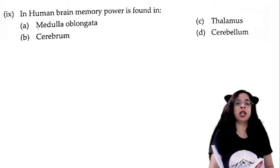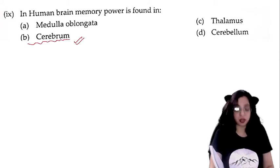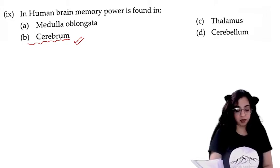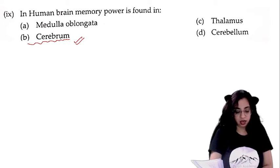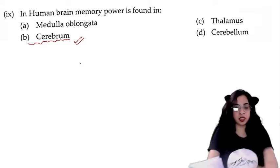In the human brain, memory power is found in: medulla oblongata, cerebrum, thalamus, or cerebellum? The answer is cerebrum. Cerebrum is the largest and most developed part of the forebrain. It acts as the center of wisdom, memory, willpower, movements, knowledge, and thinking. It also functions in the analysis and coordination of muscular movement received from sensory organs.